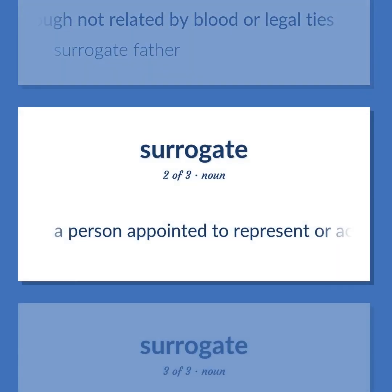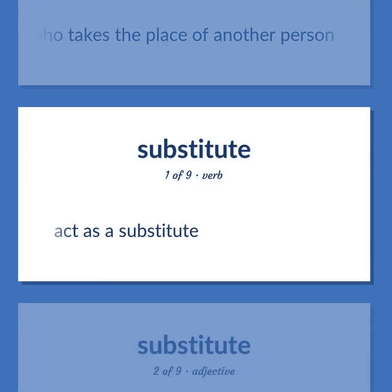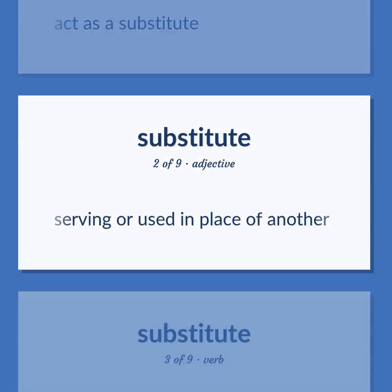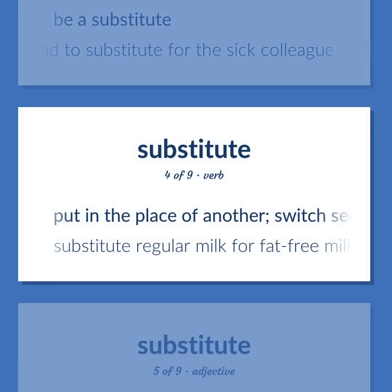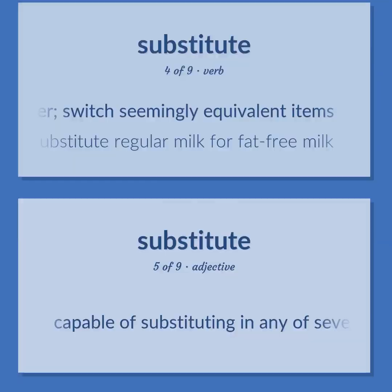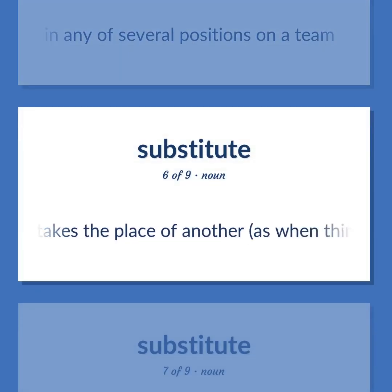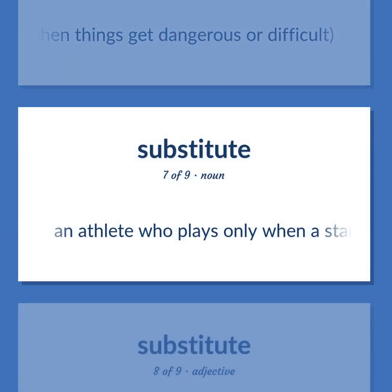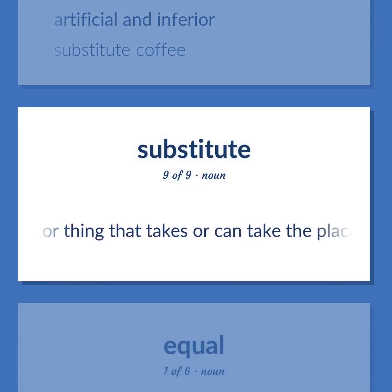Surrogate and substitute: Providing or receiving nurture or parental care though not related by blood or legal ties. Surrogate father. A person appointed to represent or act on behalf of others. Someone who takes the place of another person. Act as a substitute. Serving or used in place of another. The young teacher had to substitute for the sick colleague. Put in the place of another; switch seemingly equivalent items. Substitute regular milk for fat-free milk. Capable of substituting in any of several positions on a team. Someone who takes the place of another as when things get dangerous or difficult. An athlete who plays only when a starter on the team is replaced. Artificial and inferior. Substitute coffee. A person or thing that takes or can take the place of another.